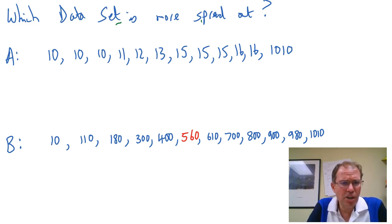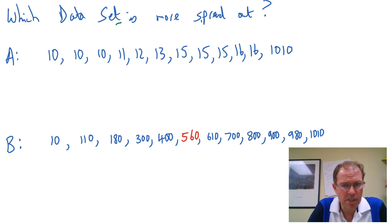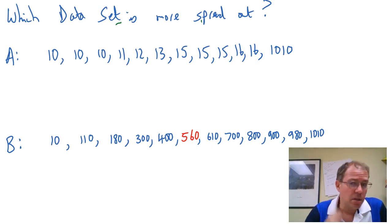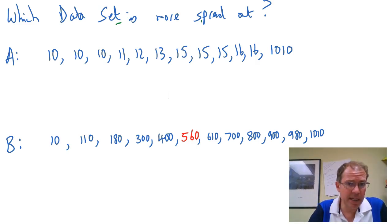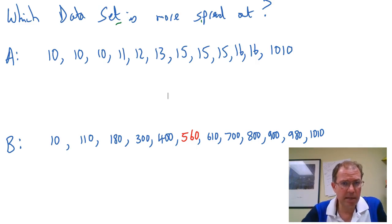So firstly I want you to look at the data set in A and the data set in B. They both have 12 numbers in them and they are both in order, which is important. Because they're both in order we can easily work out the median. So let's go ahead and do that.